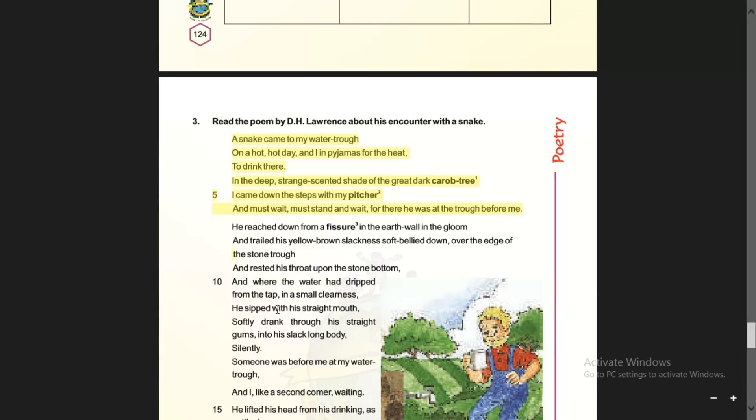And must wait, must try and wait, for the snake was at the trough before me. The poet must wait because the snake came first, and when the snake goes, he can fill up his pot.